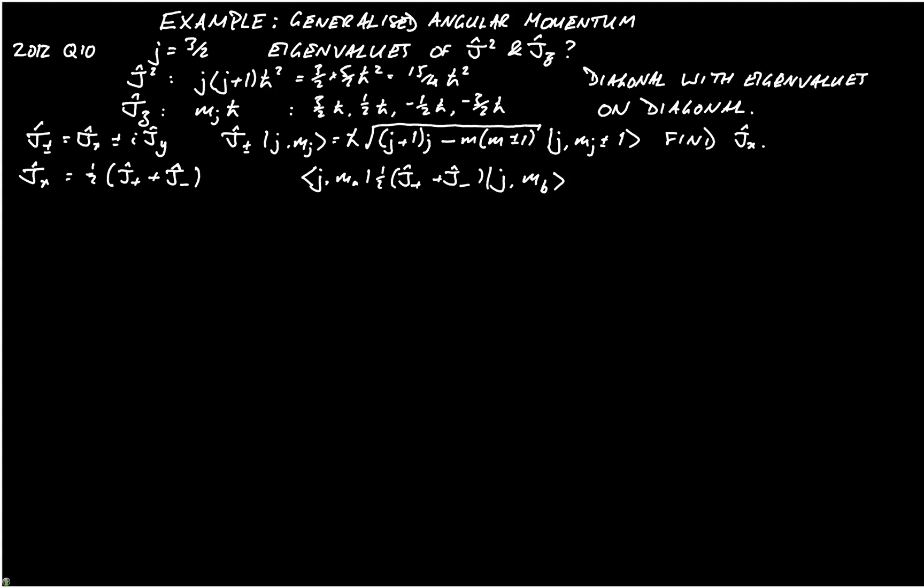Now we can split that up and we can write that as bra j m a j plus, I'll put a hat out the front, a half out the front, j j m b. And I'm going to add on to that a half j m a j minus j m b.